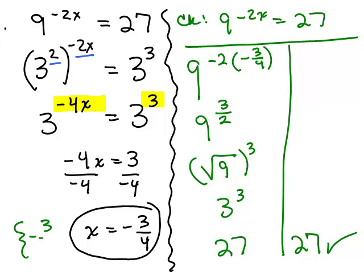So x = -3/4 is the correct answer. You can always check your answer. And if you were going to write it using a solution set, you would just put the braces around it. Let's do another one.